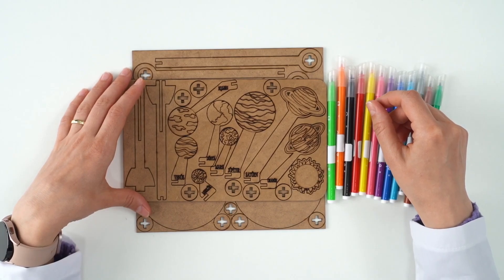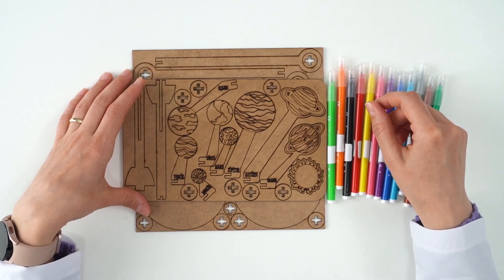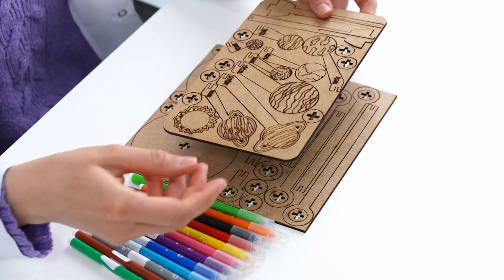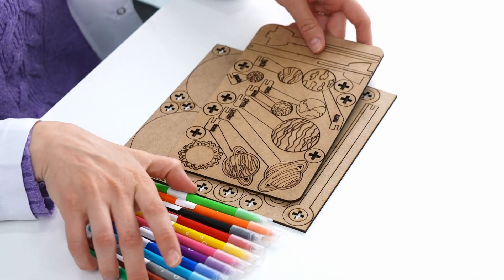Hello! Welcome to our Experimenting with Science channel. Today's experiment is solar system and planets. The materials required are a wooden planet kit and colored pencils.